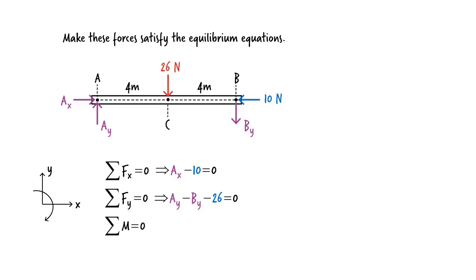Furthermore, to write the moment equation, I need to pick a point. Let's pick A. There are two forces that cause a non-zero moment about A. The downward force of 26 newtons and the downward force of B-Y. The distance from the 26 newton force to point A is 4 meters, and the distance from B-Y to point A is 8 meters. By the way, we often refer to these distances as the moment arm. Therefore, this force has a moment arm of 4 meters, and this one has a moment arm of 8 meters. Both forces create a clockwise rotation around point A, so I can write the equilibrium equation like this.